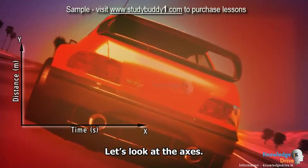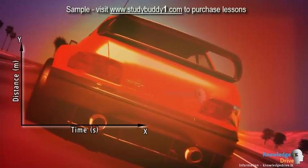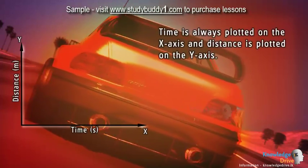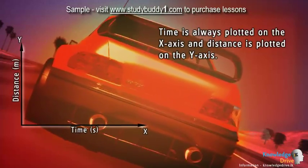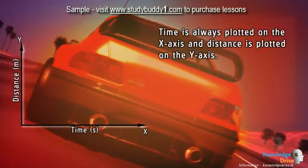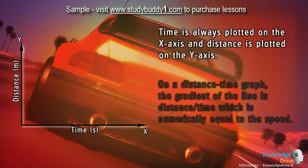Let's look at the axes. Time is always plotted on the x-axis, and distance is plotted on the y-axis.